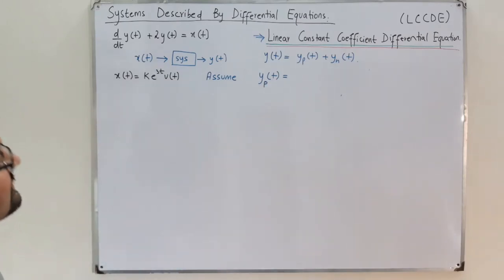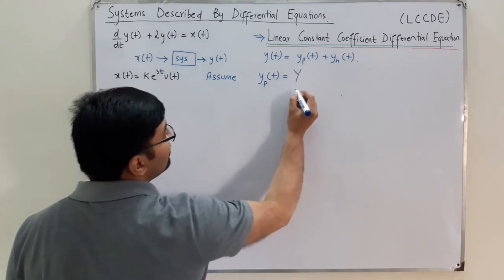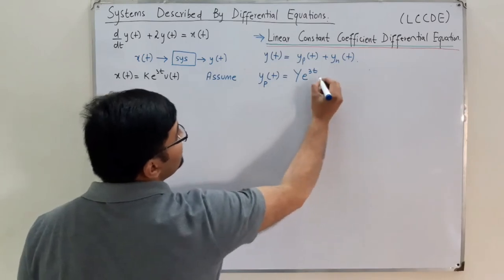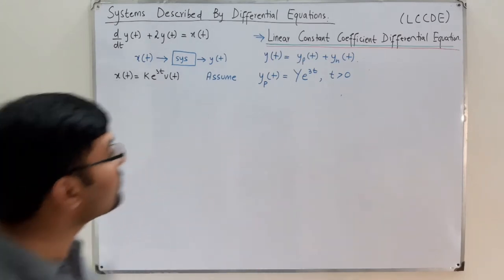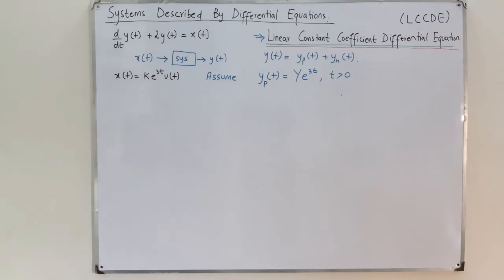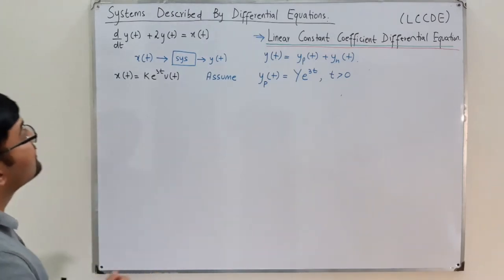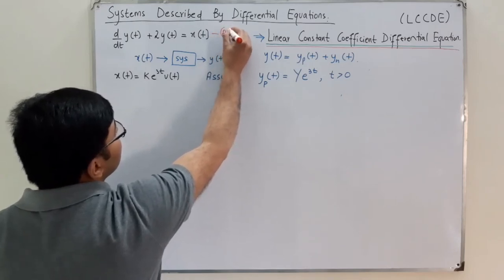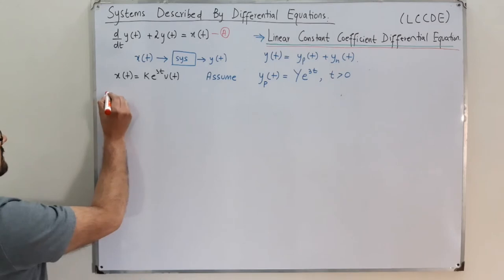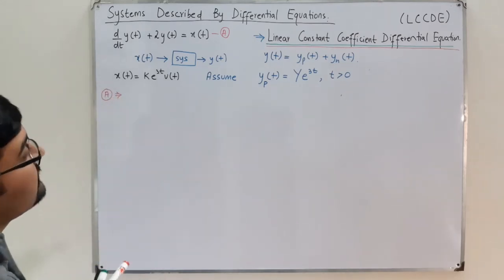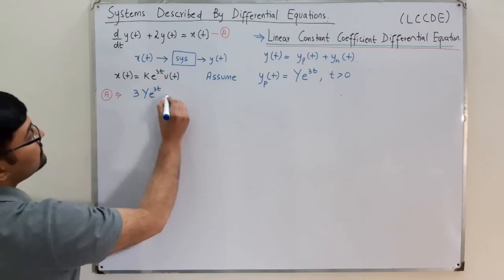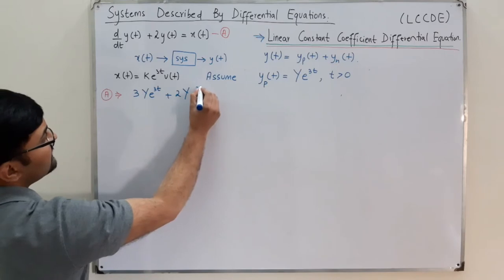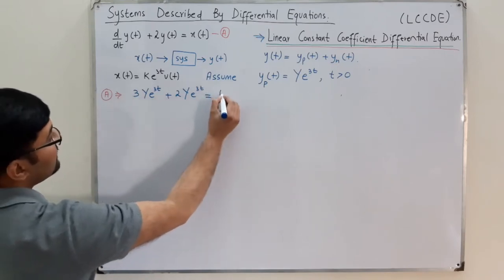Let's say y_p(t) is equal to some constant capital Y times an exponential function — you could write u(t), or equivalently write for t greater than 0. If this is the solution, it must satisfy the equation. Call this equation (a). Equation (a) implies: the derivative of y_p gives 3Y·e^(3t), plus 2 times Y·e^(3t), and this equals x(t) which is k·e^(3t), all for t greater than 0.